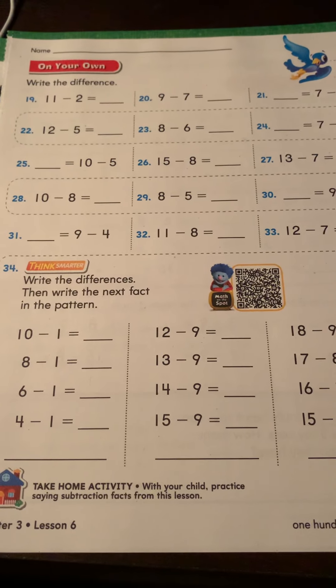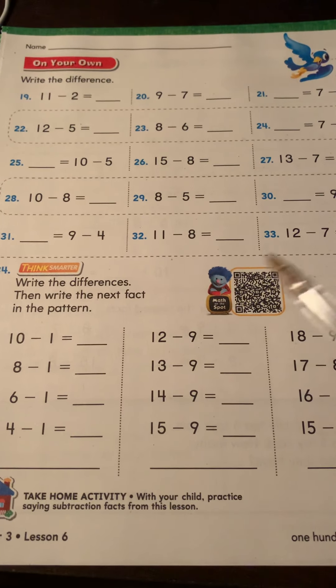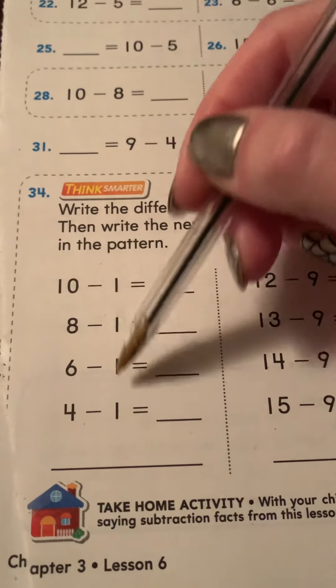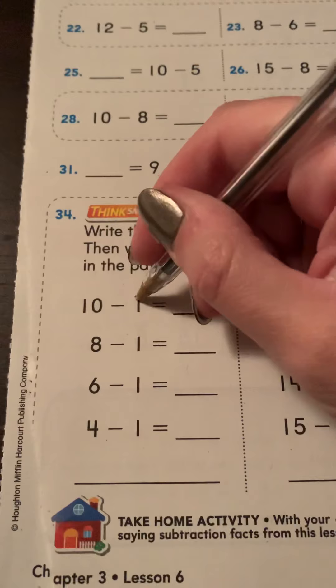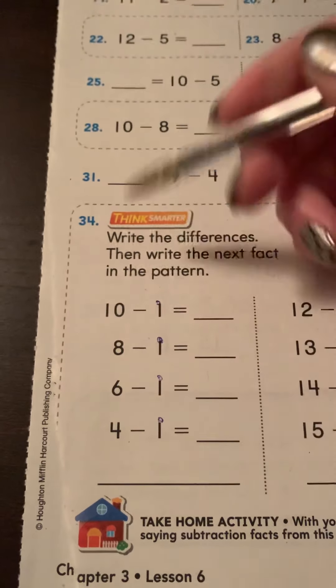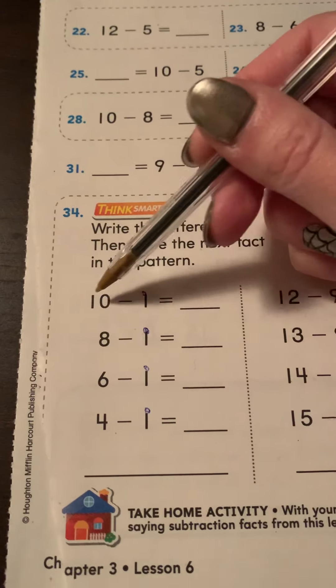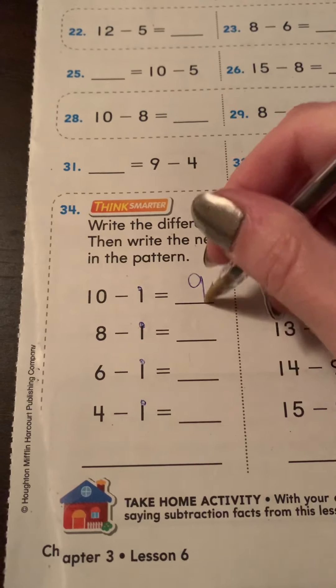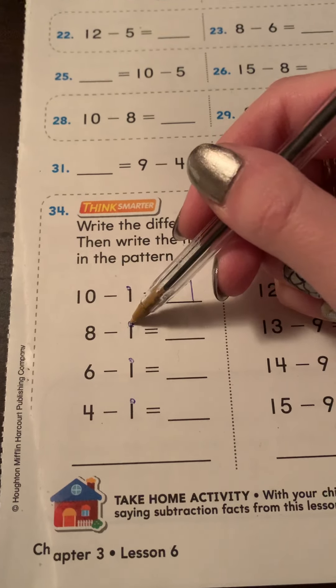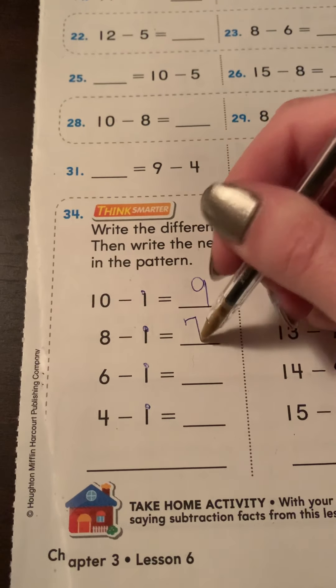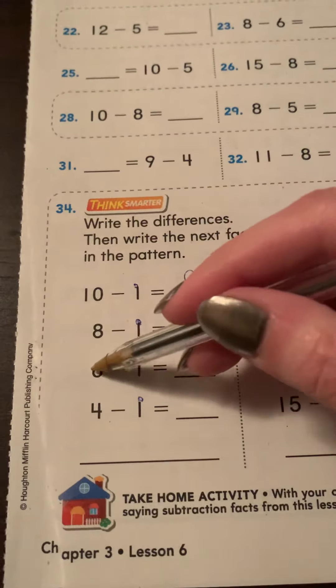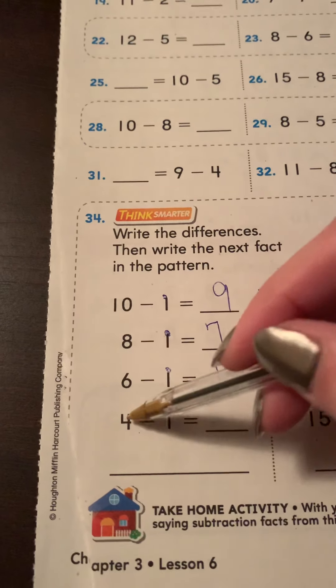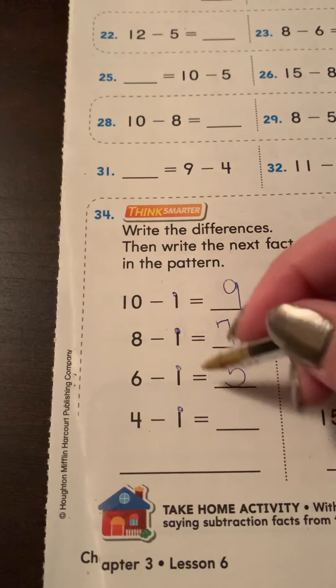And then down here, write the difference, then write the fact in the pattern. So for this one, you're going to do, all of these are take away one. One only gets one touch point. So you're going to just take away one. So 10, take away one, 10, jump back one, nine. Eight, take away one, jump back one, seven. Six, take away one, yep, five. Four, go back one, three.